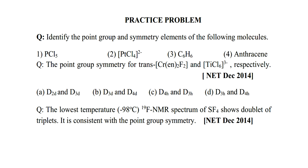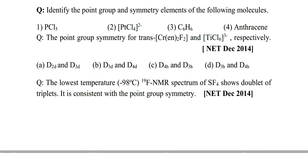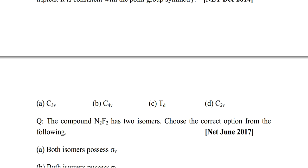Next question from NET December 2014: identify the point group symmetry for trans-[Cr(en)2F2] and TiCl6³⁻ respectively. Please try to identify the symmetry elements and point group of these molecules. Another question from NET December 2014: the lowest temperature (−98°C) ¹⁹F NMR spectrum of SF4 shows a doublet of triplets — this is consistent with which point group symmetry? Options are: C3v, C4v, Td, or C2v.